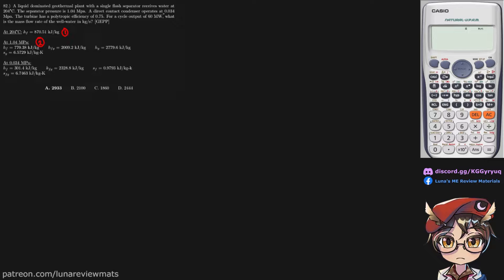A direct contact condenser operates at 0.034 MPa. So if this is the condenser, that is our fourth state. The turbine has a polytropic efficiency of 0.75. And for a cycle output of 16 MW. So that is our turbine work. And of course this has prime because we have an efficiency.